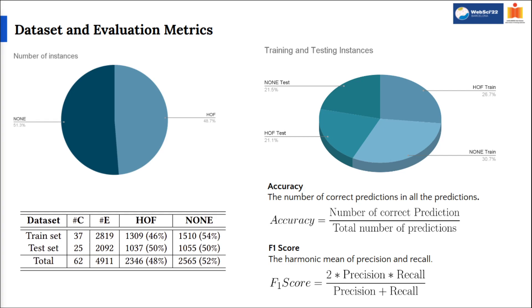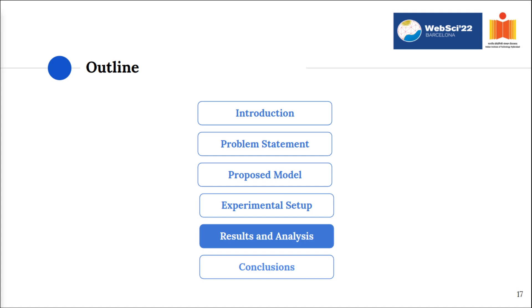Not just the baselines, we have the training and testing sets and metrics of evaluation. A total of 62 different conversational threads were divided with a ratio of 60-40 into training and testing conversations. The pie chart on the left shows the number of HOF and non-hostile labeled instances in the entire data, which is further divided into HOF and non-hostile on the right for each train and test set. And for evaluations of the model, we will be using accuracy and F1 score as metrics.